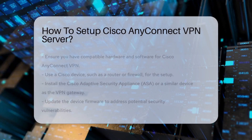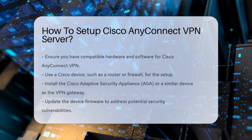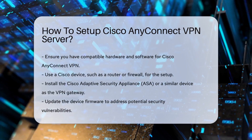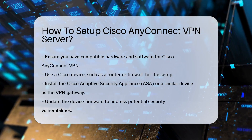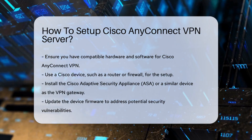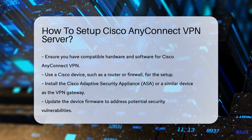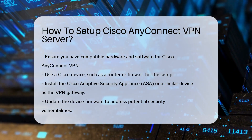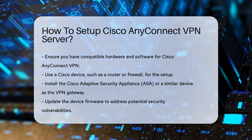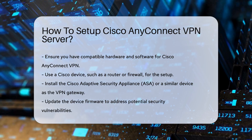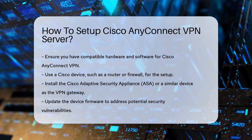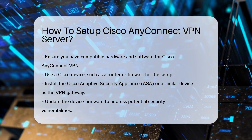Setting up a Cisco AnyConnect VPN server involves several critical steps. Firstly, ensure you have the necessary hardware and software. Cisco AnyConnect requires a compatible Cisco device, such as a router or firewall.